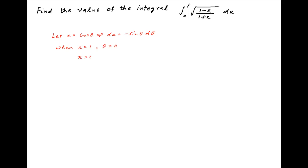This implies θ = 0. And when x = 0, which is the lower limit of the given integral, θ = π/2. Therefore the given integral can be written with limits from π/2 to 0.